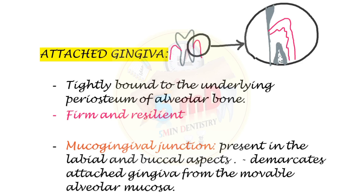In the previous video, we saw about the divisions of gingiva: marginal gingiva, attached gingiva, and the interdental component. Here in detail, we'll see about attached gingiva. Attached gingiva, as the name suggests, is tightly bound to the underlying periosteum of the alveolar bone.